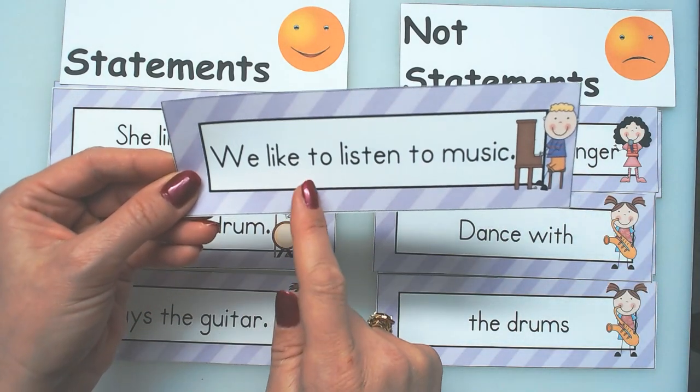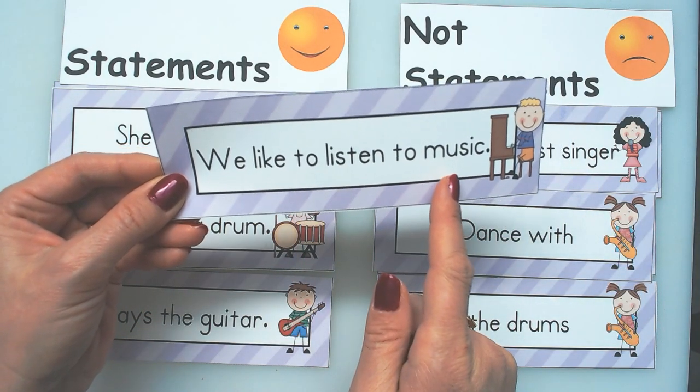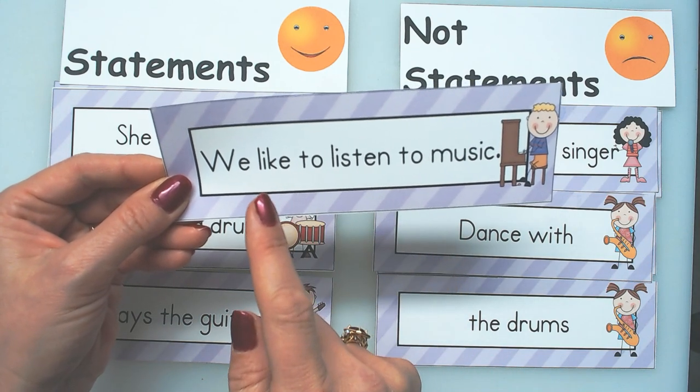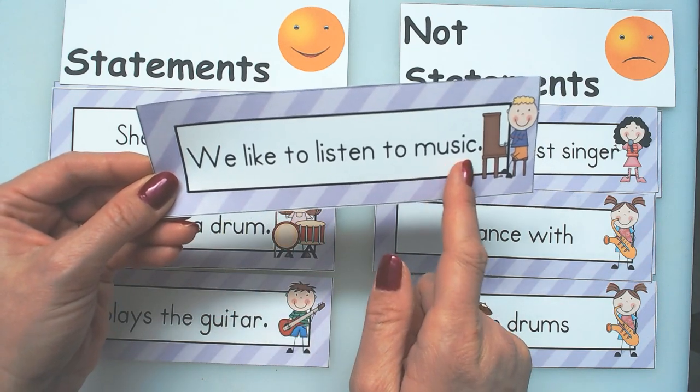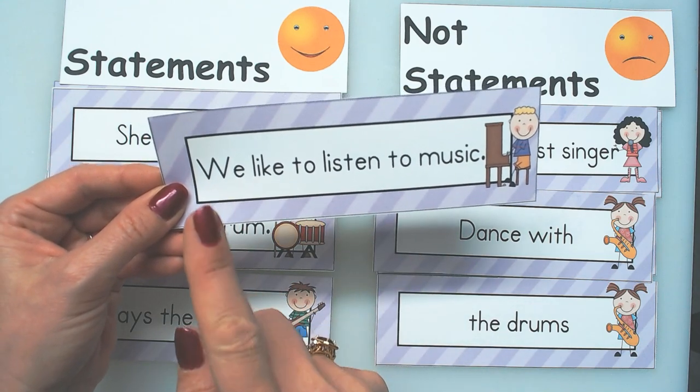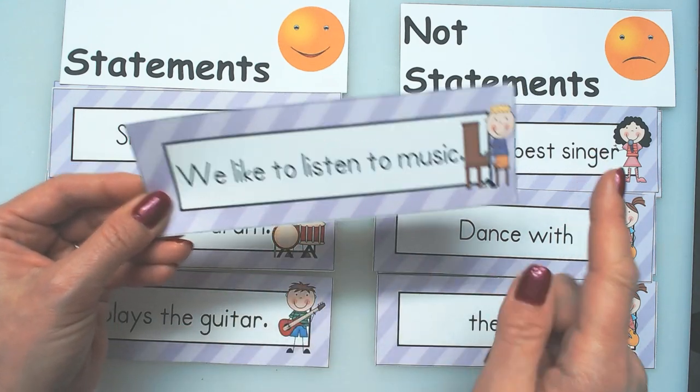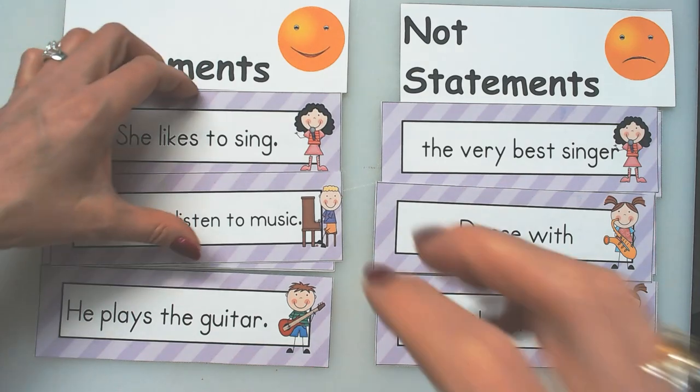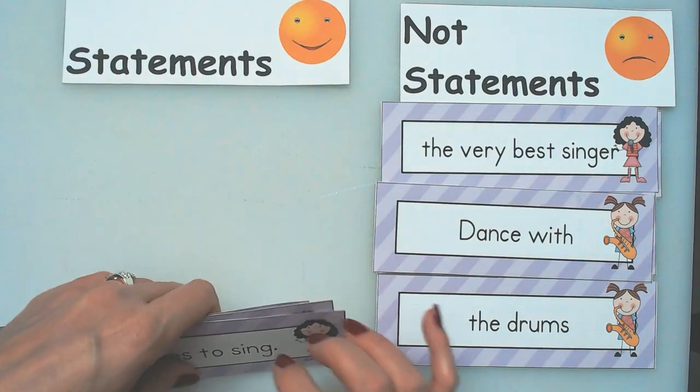We like to listen to music. It has a period. Let's see, does it make sense? We like to listen to music. Yes, it makes sense because it said who it was and what they did. Okay, boys and girls, so there's a lesson on statements versus not statements.